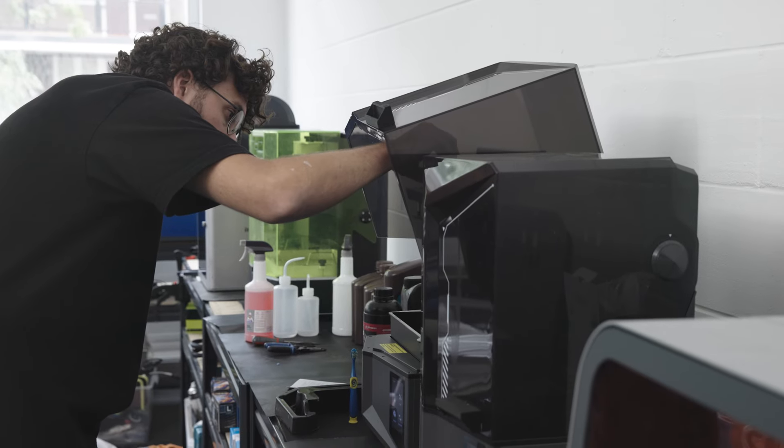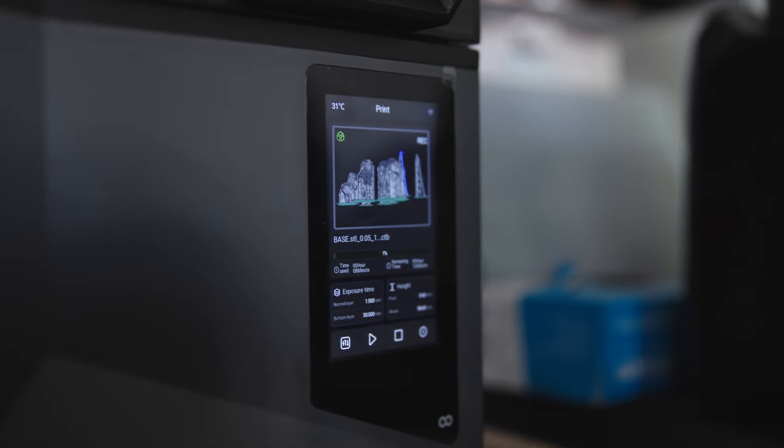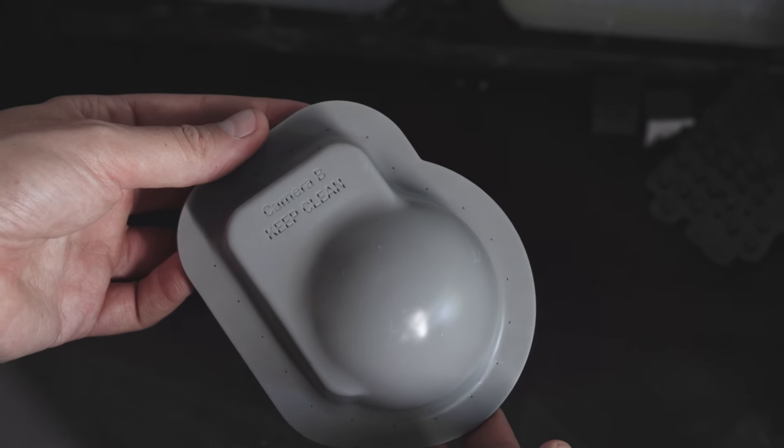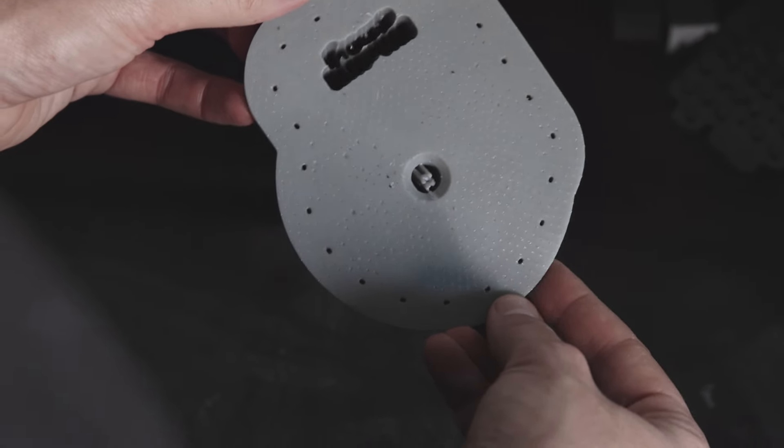We're going to be using a high temperature SLA resin for both of the tools. You want to make sure it's been post-processed very well and all of the air holes have been evacuated of resin and you're happy with the final result.